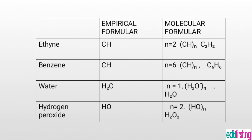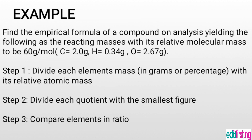Benzene has the same empirical formula as acetylene: CH. Its molecular formula has n equal to 6, so we have C₆H₆. The molecular formula shows the exact number of moles of atoms: 6 carbons and 6 hydrogens. The empirical formula simply shows the component elements in the molecule. The same relationship applies to water and hydrogen peroxide.